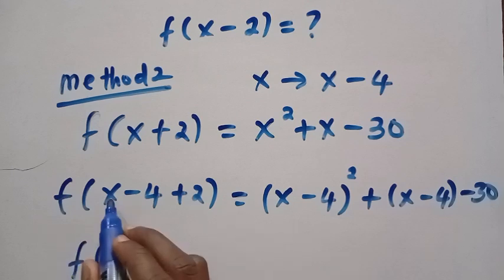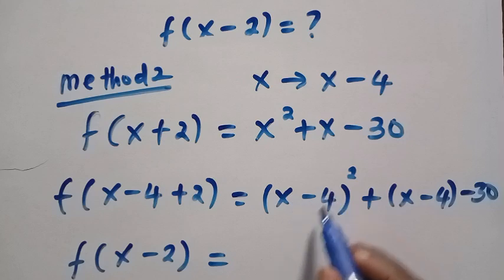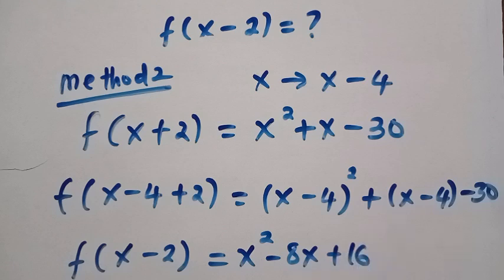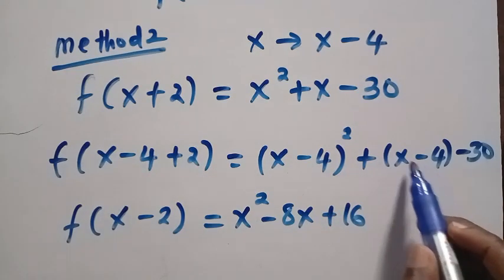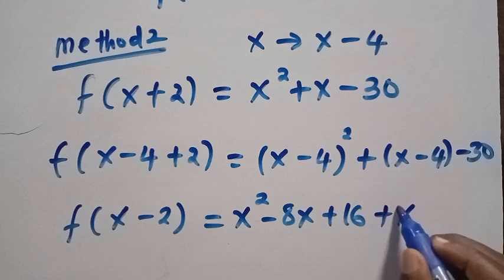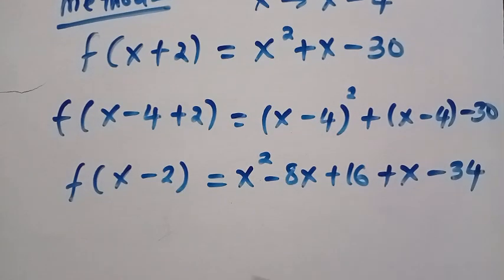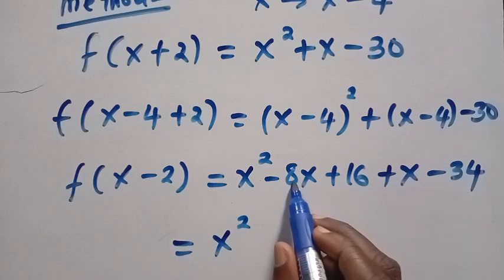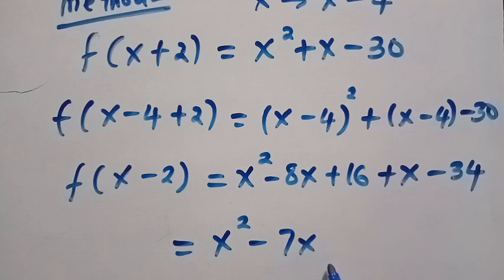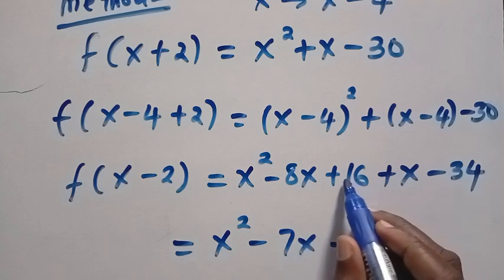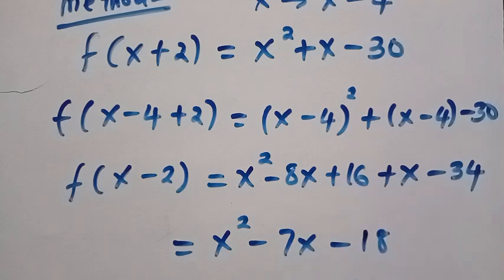Here we have f(x-4+2), that is x minus 2, equals, if we expand this out, we are going to get x squared minus 8x plus 16. And also x minus 4 minus 30, this gives us plus x minus 34. After having this, we have x squared minus 8x plus x, that is minus 7x, then we have plus 16 minus 34, that is minus 18.